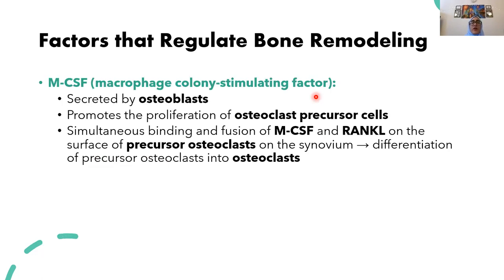M-CSF, or macrophage colony-stimulating factor, is secreted by osteoblasts. It promotes proliferation of osteoclast precursor cells and allows differentiation of precursor osteoclasts into mature osteoclasts. This is done in conjunction with RANKL binding — RANKL is on osteoblasts, and M-CSF essentially converts osteoclast precursors into mature osteoclasts.